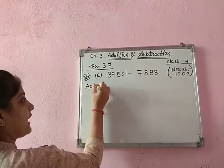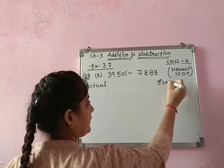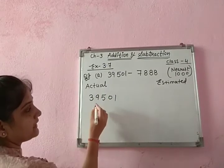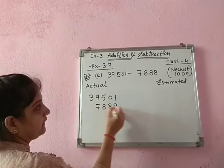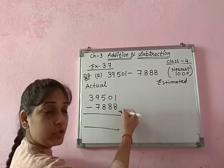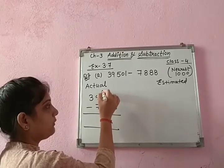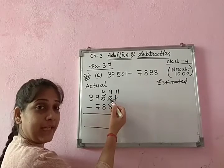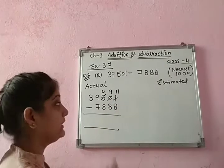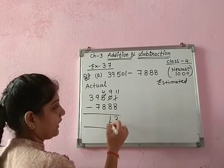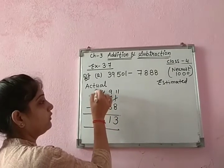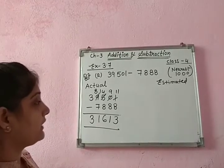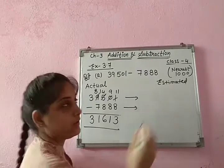Let me explain the nearest-thousand question as well. Question 2 part A: 39,501 minus 7,818. First find the actual difference — numbers are written as given. Subtracting: 1 minus 8 we cannot do, and from 0 we cannot borrow, so take from the next digit — it becomes 4, then 9, and this is 11. 11 minus 8 is 3. 9 minus 8 is 1. 4 minus 8 not possible, so borrow — 14 minus 8 is 6. 8 minus 7 is 1. And 3.